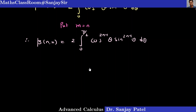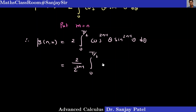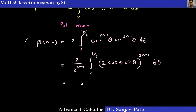I want to use the sin 2θ formula. To convert cos theta times sin theta into sin 2theta, let me multiply and divide by 2 raised to 2n minus 1. This gives 2 divided by 2 raised to 2n minus 1, times the integral from 0 to π/2 of sin 2theta raised to 2n minus 1, d theta.